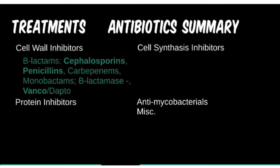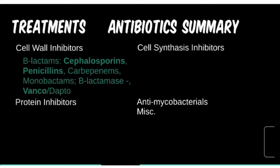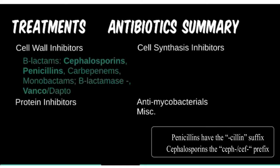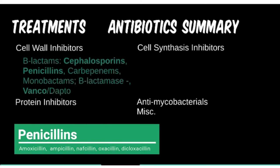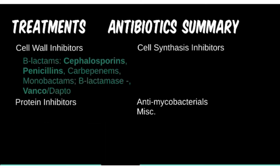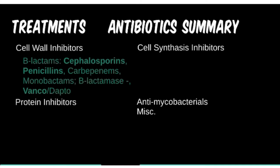Penicillins and cephalosporins are versatile, each having several generations or categories of newer antibiotics. They are easily spotted by having the '-cillin' suffix or 'cef-' prefix respectively. There are about 20 in each class that you should have a general familiarity with. However, unless you are planning on going into infectious disease specialties, it's unlikely that you'll need to master every drug within each generation.